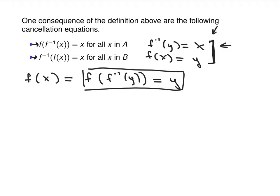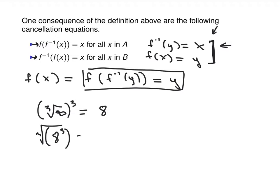It's a fancy way of saying: if you take a number and cube root it, and then cube it, what do you get back? If you cube root 8 and then cube the result, you get 8. And if you cube 8 first and then take the cube root, you also get 8. Doing one thing and then the other is an example of composition.